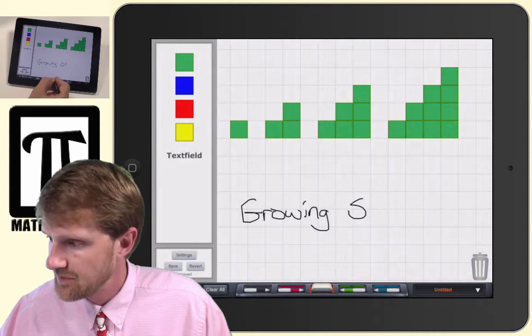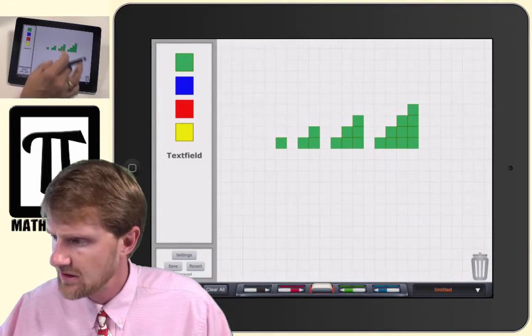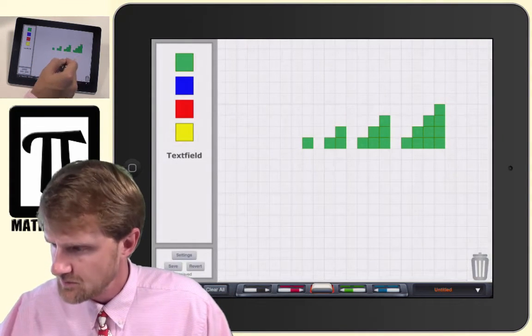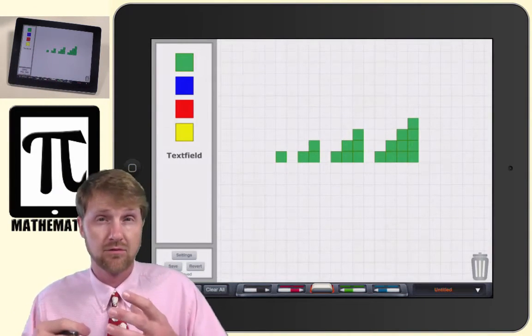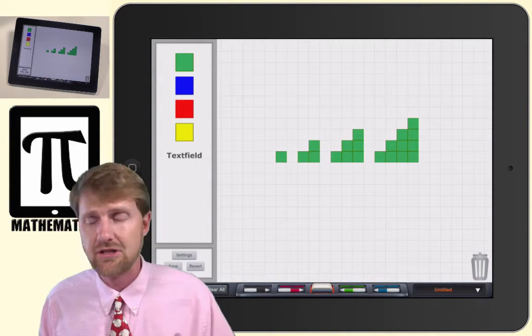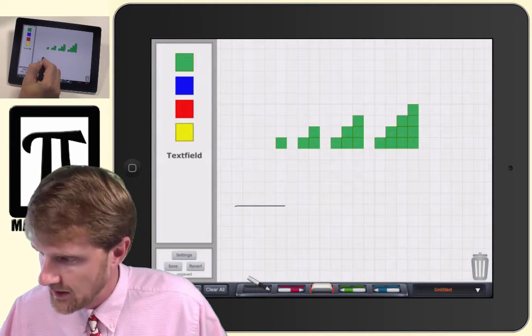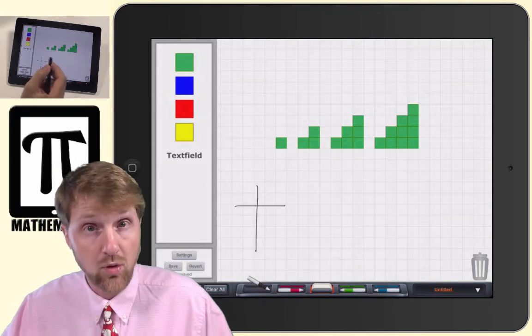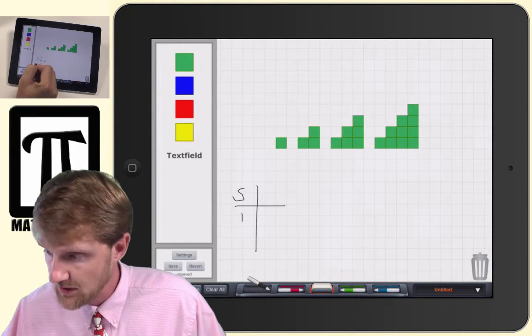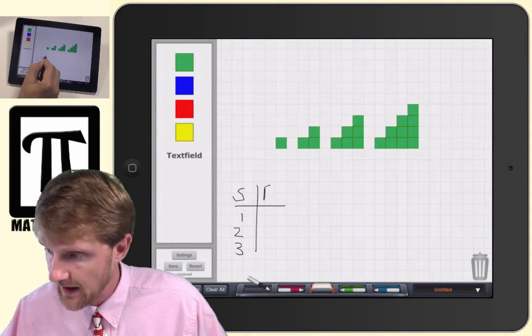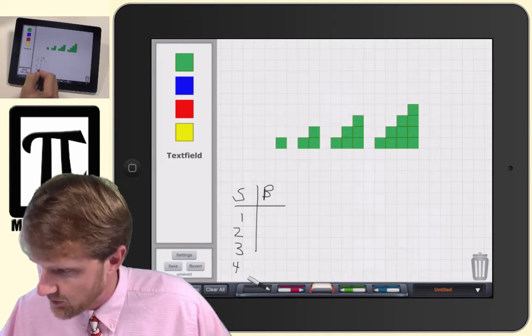I'm going to erase the growing squares. I'm going to make this a little bit smaller. What I tell students and what a great heuristic problem solving strategy is, is to make a table. And so, we're going to make a table. And in this table, we're going to say the staircase—the first one, the second one, the third one, and then how many blocks were in that staircase.